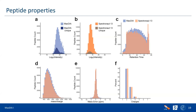Unique peptides identified by each software are at low abundance in the intensity distribution, which is expected — it would be surprising to find high-abundance peptides seen by one software but missed by another. This is explicable by being at the signal-to-noise level.